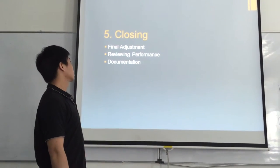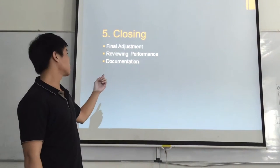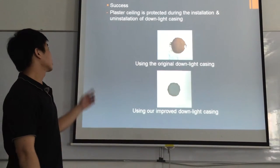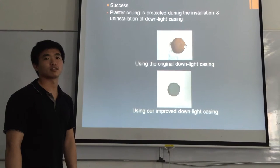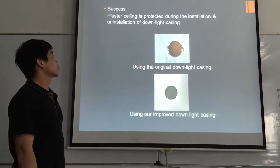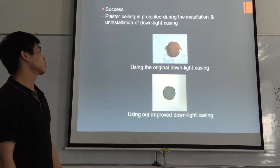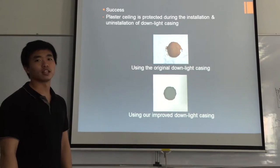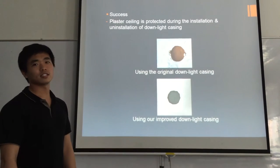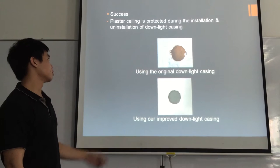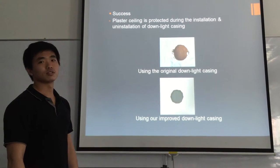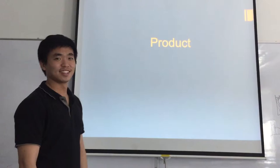The fifth process is closing, which includes final adjustment, reviewing performance, and documentation. Our project is considered a successful project because our product can protect the plaster ceiling from damage during the installation and uninstallation of the downlight casing. As we can see in the photo, if the original downlight casing is used, the plaster ceiling will be damaged, but if our improved downlight casing is used, it will not be damaged.